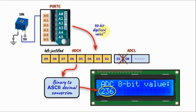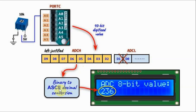The 10-bit digitized value output from the analog to digital converter is copied onto register pair ADCL and ADCH. The value in ADCL is discarded, while the 8-bit value in ADCH is retained. Next, the 8-bit binary value is converted to a 3-digit ASCII decimal value and then displayed on the LCD screen.